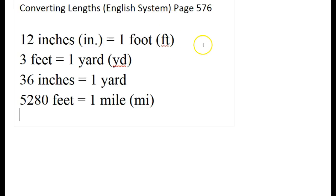The next section we're going to be looking at is the first section of chapter 9 — chapter 9, section 1. That starts on page 576. We're going to be talking about converting lengths within the English system, within the metric system, and from English to metric and metric to English.